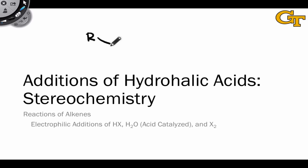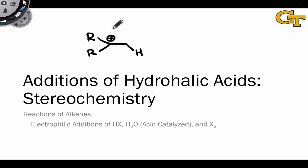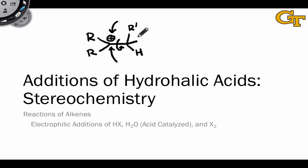The stereochemical properties of the carbocation intermediate involved in hydrohalogenation are key to understanding the stereochemistry of this reaction. In particular, it's important to keep in mind that the nucleophile, the halide anion, can approach from above or below the plane of the carbocation, and free rotation about this bond is possible so that the hydrogen and any substituents attached to this carbon can rotate readily.